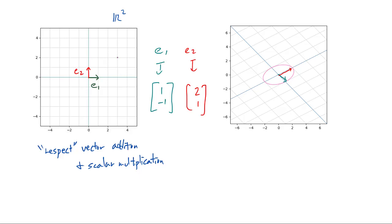What I mean by this respecting vector addition and scalar multiplication is that for example, if we look at the vector (1, 1) — this is simply e1 + e2 — so if e1 is being sent to (1, -1) and e2 is being sent to (2, 1), and if we are respecting vector addition, we want this vector (1, 1) to be sent to simply the sum of (1, -1) and (2, 1). So we want to make sure that (1, 1) is sent to that vector. That's the part of respecting vector addition.